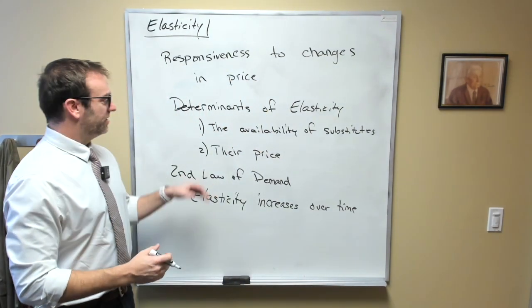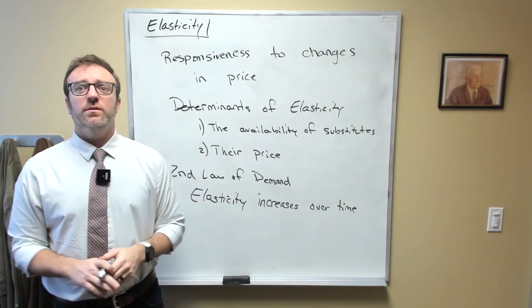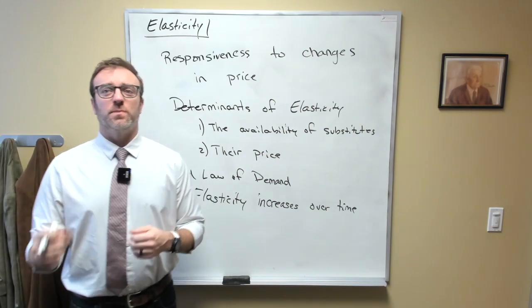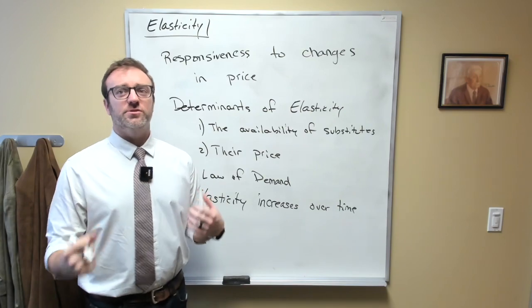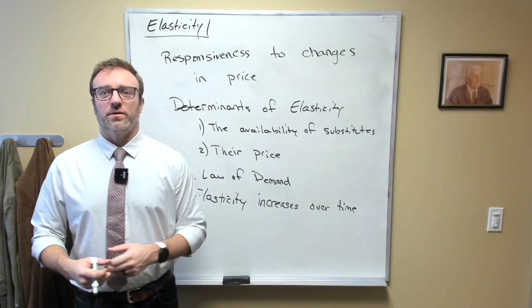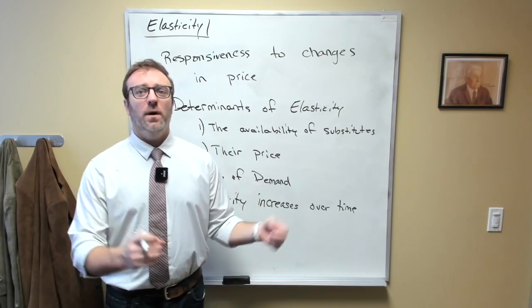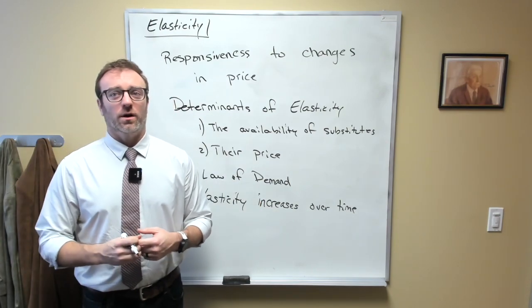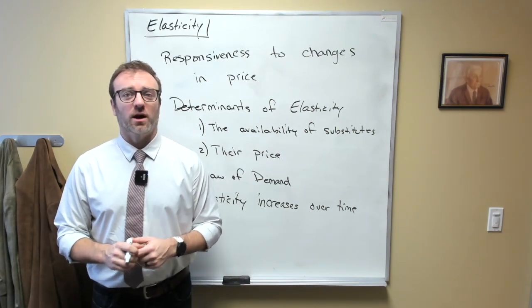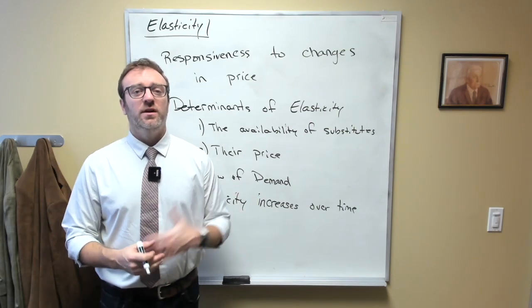Now if elasticity is determined by the availability of substitutes and their price, then increasing the number of substitutes and decreasing their price will lead to consumers responding more and more to changes in the price of the original good. For example, if you owned all of the magic pills in existence, you would wield tremendous power. But if someone else came along and recreated the formula for the magic pills, you suddenly would have far less power. If you raised your price, your customers would go to the other seller instead of you.